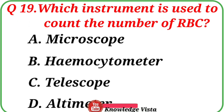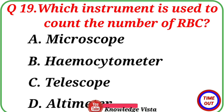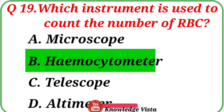Question number 19: Which instrument is used to count the number of RBCs? Option A: Microscope. Option B: Hemocytometer. Option C: Telescope. Option D: Altimeter. The correct answer is option B, Hemocytometer.